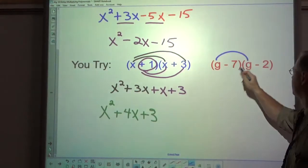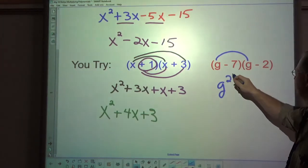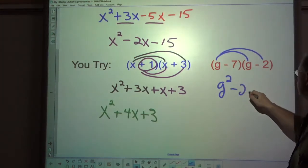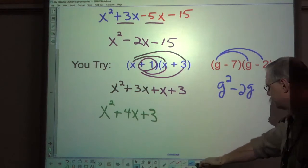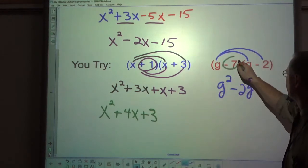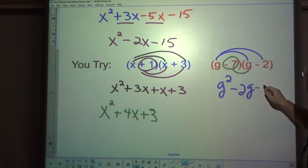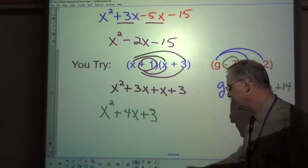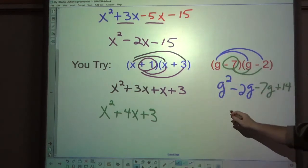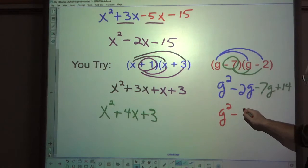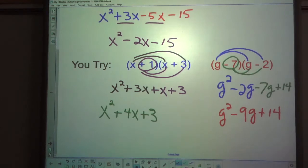Let's try this one. Now, g squared minus 2g, then the negative 7 minus 7g plus 14. Combine my like terms, I get g squared minus 9g plus 14. And there you have it.